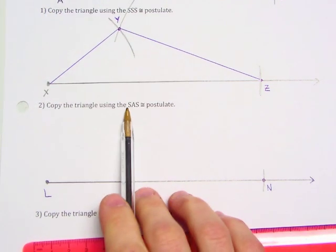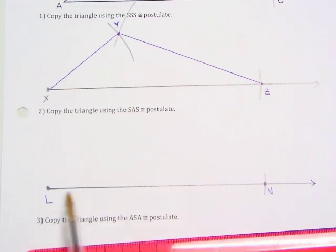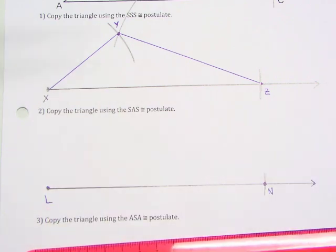So we have one side here. Now what we're going to do is copy an angle. At this point, we can either copy angle X or angle Z. So let's go ahead and copy angle X.